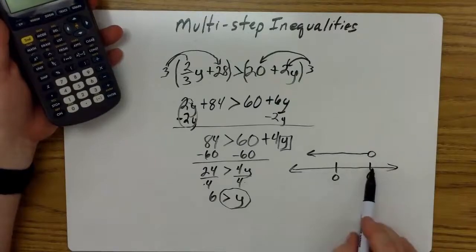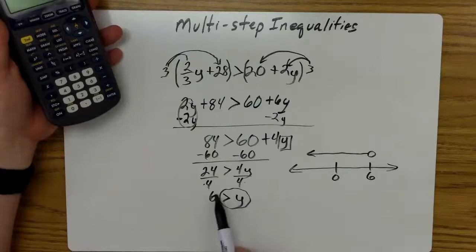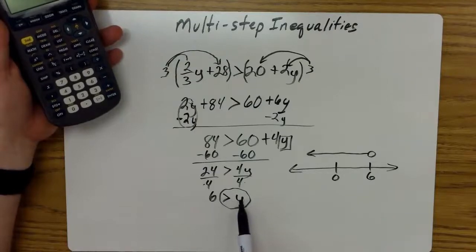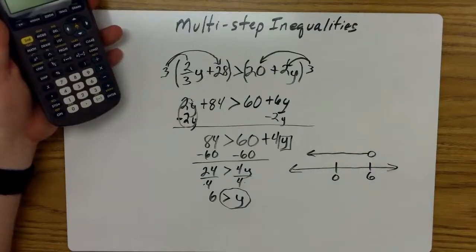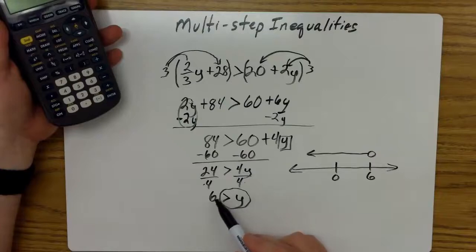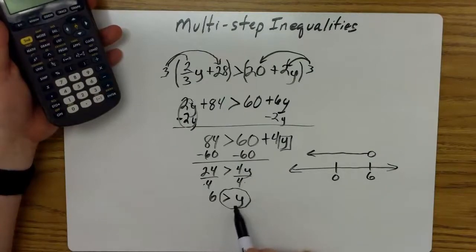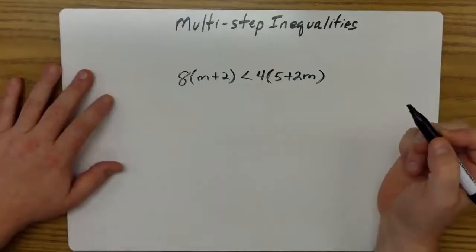There is another way we can check this. We can pick a point other than 6. Let's say we choose 0. Substitute 0 here and see if that inequality is true. Is 6 greater than 0? The answer will be yes, so I arrow in the direction of 0. Or I can simply ask myself, am I looking for values that are bigger or smaller than 6? And of course the answer is smaller. And on a number line, smaller numbers are always to the left.